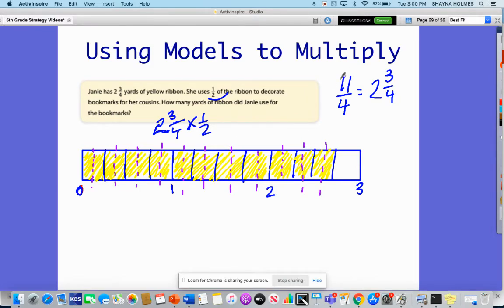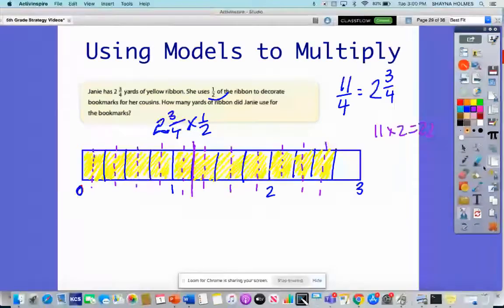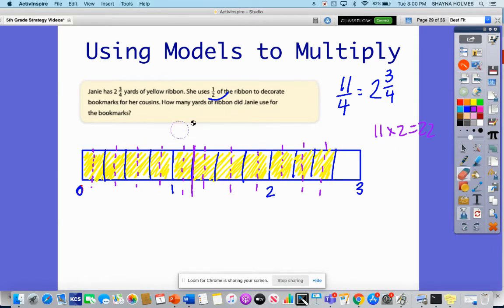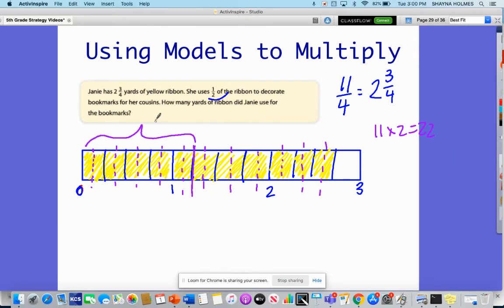Now that I've broken each set of eleven in half, can you guess how many I have now? Eleven times two is twenty-two. I broke each into two pieces, so I will have twenty-two. Now I know that eleven is actually half. Counting one through eleven, this represents half.